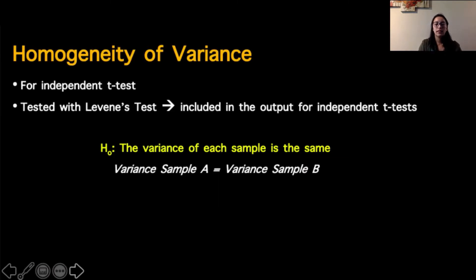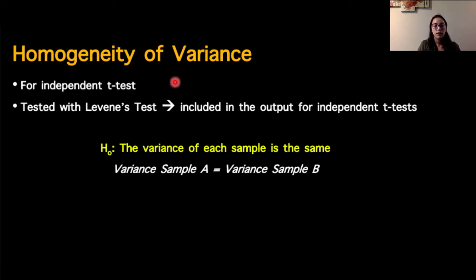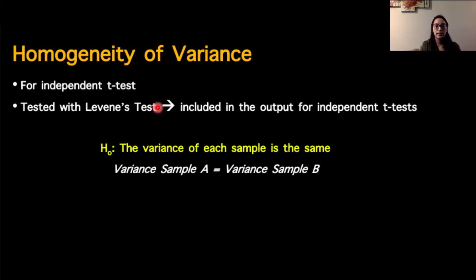For homogeneity of variance — it's for independent t-tests only. This will also come back when we talk about independent or one-sample ANOVAs, so it'll be a repeated concept. If you don't get it this week, hopefully it'll start to make sense as we introduce it in the ANOVA lectures. We test it with Levine's test, which is run in the output for the independent t-test, so when we set up the test, it's automatically included in the output.